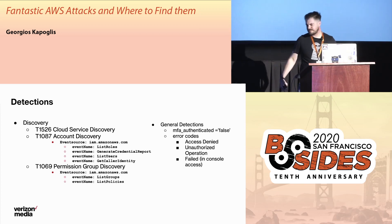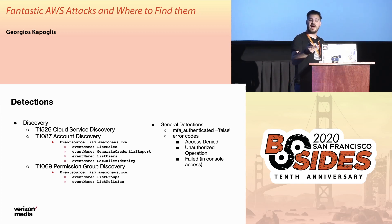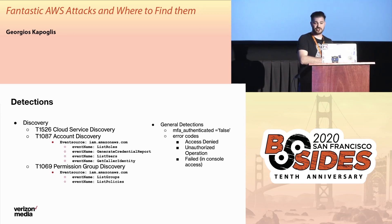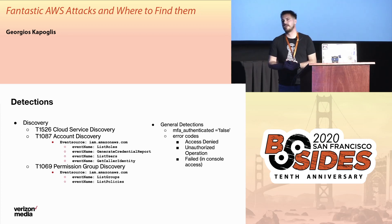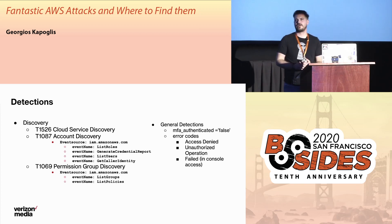As general detections, if specific roles, users, or groups should always go through single sign-on and multi-factor authentication to access AWS, you can look for the MFA authenticated tag — if it's false when it shouldn't be, that's a red flag. Also, look for error codes — access denied, unauthorized operation, and failed access on any of those event names should be investigated. With some data analysis, you can filter out the normal developer cases.